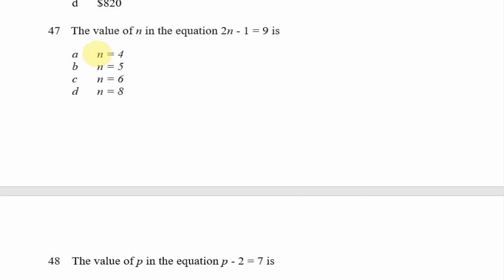Looking at question 47: the value of n in the equation 2n minus 1 equals 9. One approach is trial and error — substitute each answer option for n. Trying n = 4: 2 times 4 is 8, and 8 minus 1 is 7, not 9, so n = 4 is incorrect. Trying n = 5: 2 times 5 is 10, and 10 minus 1 is 9. That works, so our answer is option B, n = 5.